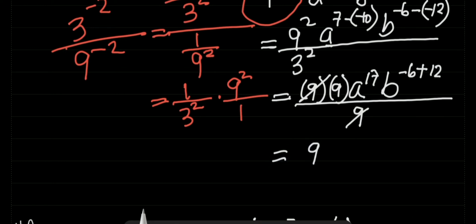This gives us 9 times a raised to the power of 17, times b to the power of negative 6 plus 12, which is positive 6. So this is now the answer for number one.